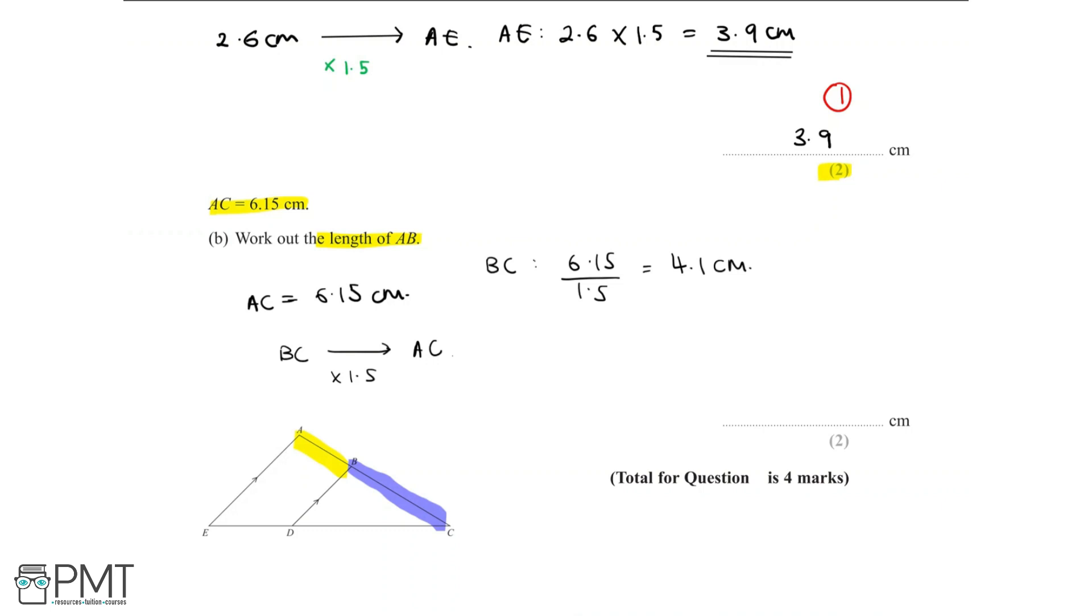AC equals 6.15cm. So to find AB, we can say that AB equals AC take away BC, equals 6.15 take away 4.1, and so we get a final answer of 2.05cm.